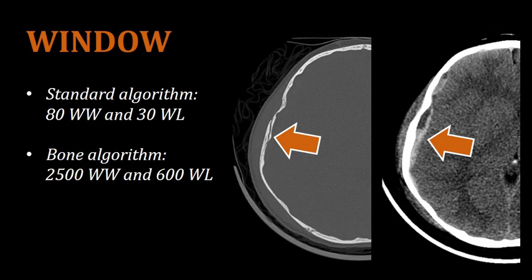When represented correctly, these settings clearly display very different structures. The image to the left is a bone algorithm in bone window settings, showing a fracture in the parietal bone. The same slice on the right was reconstructed with the standard algorithm at 80 window width and 30 window level — this does not show the fracture, but it does show an epidural hematoma at the level of the parietal lobe in the same area where the fracture was. That is why it is important to reconstruct the brain with both standard and bone algorithms and display them correctly.